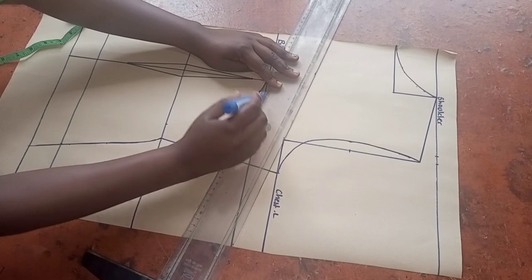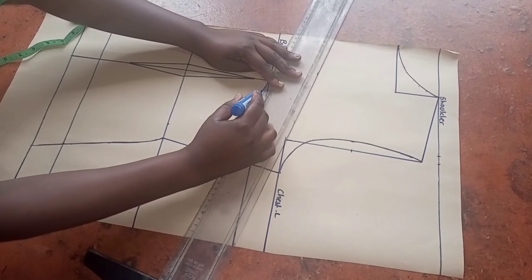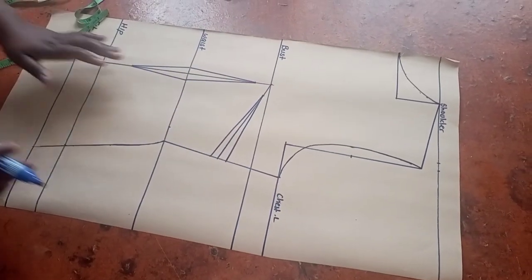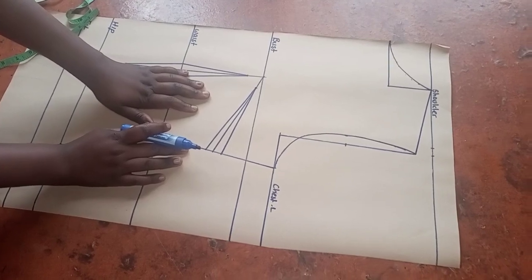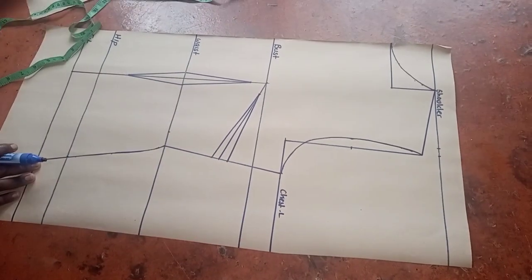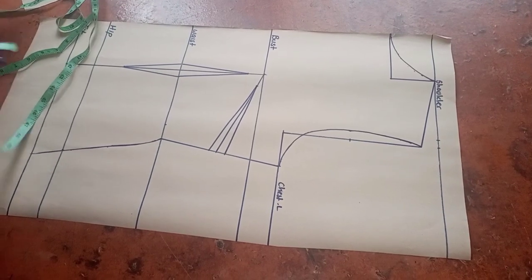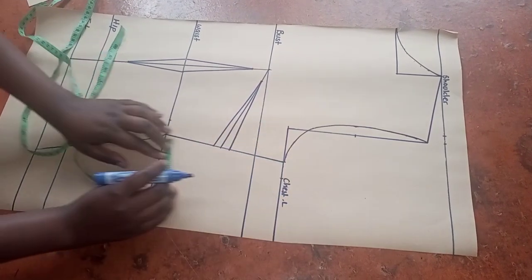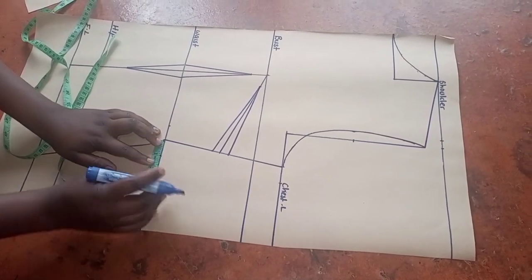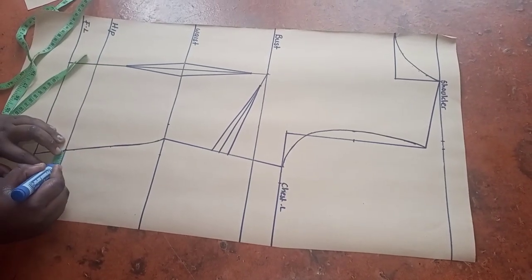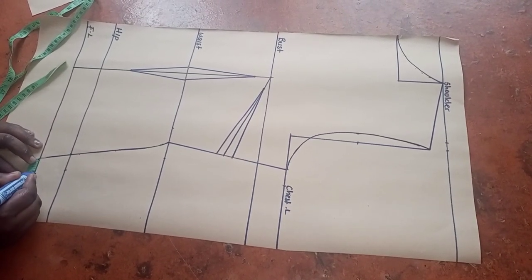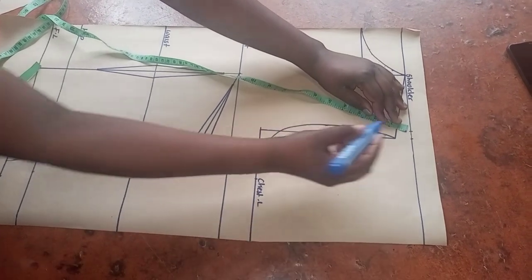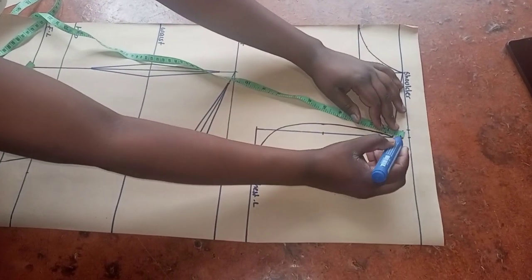Please don't mind my ruler — it's so big. That is our side dart. So now that we're done, we're going to put the allowances. I'm going to use 1-inch sewing allowance, so I'm going to add that on all parts — at the waist and at the hip. This is our allowance. We can also add 0.5-inch allowance at the shoulder for joining the shoulders.